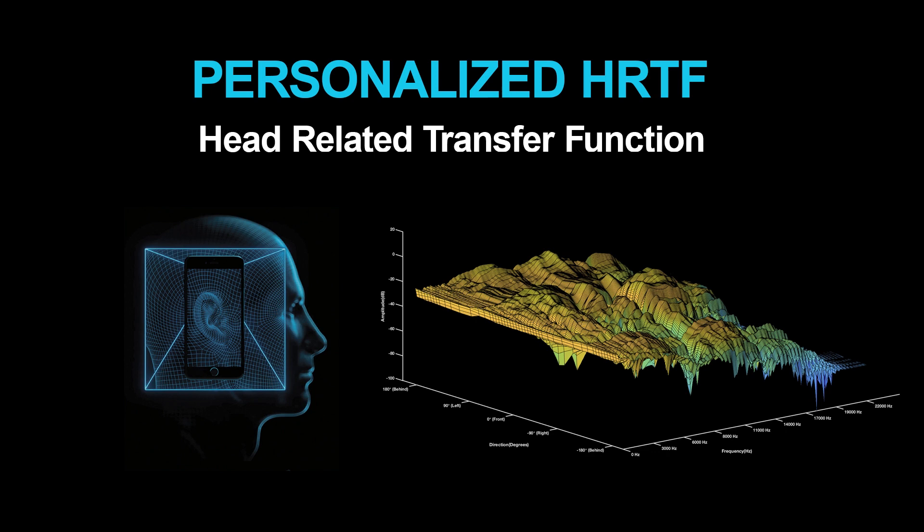HRTF stands for Head-Related Transfer Function. It models how sound travels from any direction into your eardrum and is incredibly unique to each individual. From an early age, our brain evolves to hear sound coming from all directions based on the distinctive physical shape of our ears.